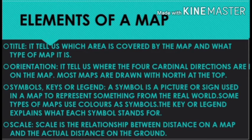The next element of a map is orientation. It tells us where the four cardinal directions are on the map. The four cardinal directions are north, south, east, and west. Most maps are drawn with north at the top.